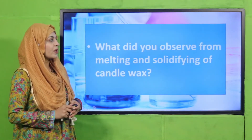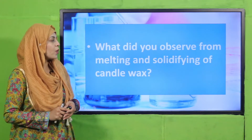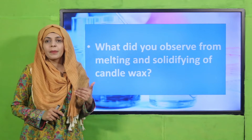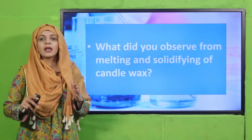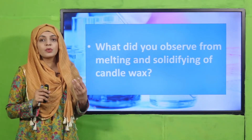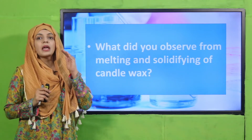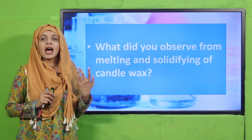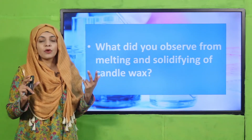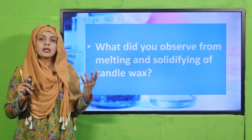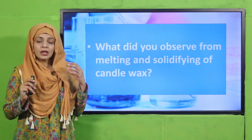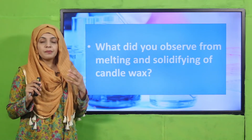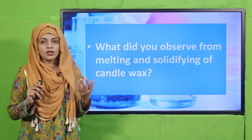Let's quickly recap what we did in the previous lecture. Listen to the questions carefully and answer quickly. What did you observe from melting and solidifying of candle wax? In the previous lecture, we did an experiment where we burned a candle. We observed that the candle wax started melting and the wick changed into smoke and ash — two types of changes: a permanent chemical change, and a temporary change of solidifying and melting of the candle wax.